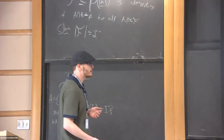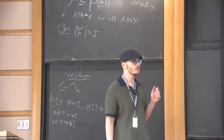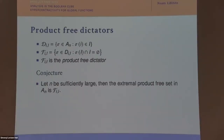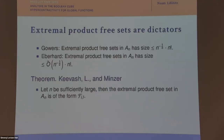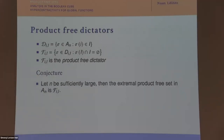Crane's conjecture is that this construction gives the extremal product-free set in the alternating group. In Aₙ, you take I of size roughly √n. The condition that I is sent to its complement happens with constant probability, and the condition that x is sent to I happens with probability 1/√n — that's how you optimize the parameters. The conjecture is that the extremal family is always of this form, for some set I.